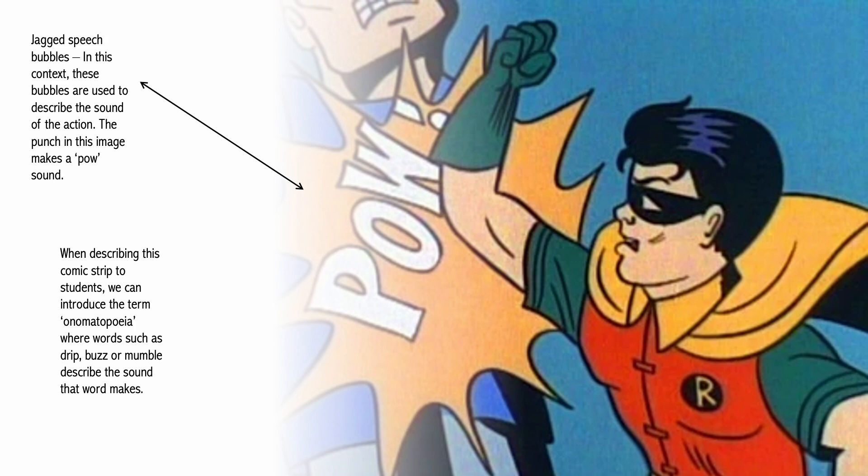The jagged speech bubbles that you can see in this image are used to describe the sound of each action. The punch in this image makes a 'pow' sound. When describing this particular comic strip to students, we can introduce the term onomatopoeia, where words such as drip, buzz, or mumble describe the sound that the word makes.